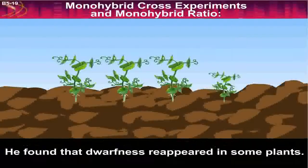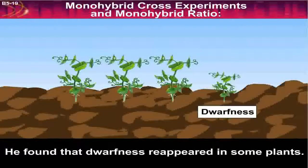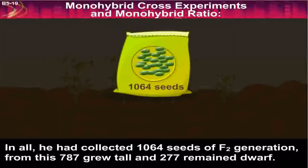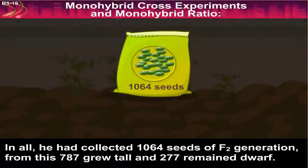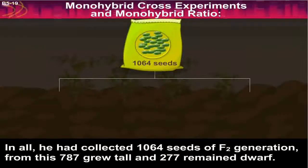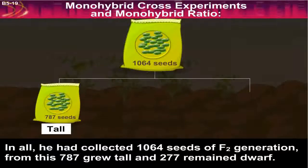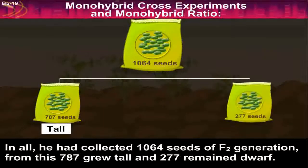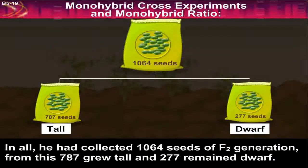He found that dwarfness reappeared in some plants. In all, he had collected 1064 seeds of the F2 generation. From this, 787 grew tall and 277 remained dwarf.